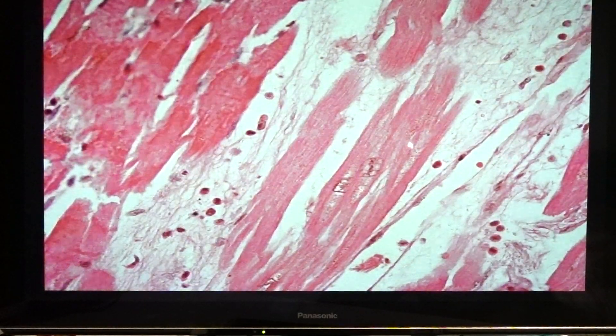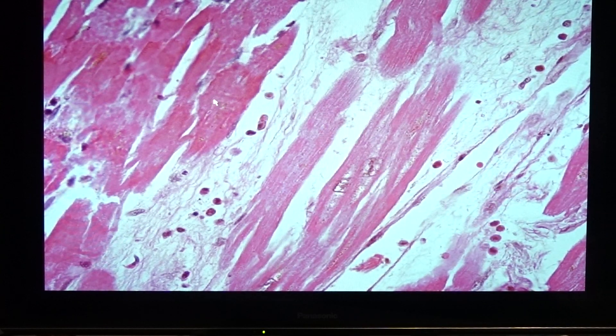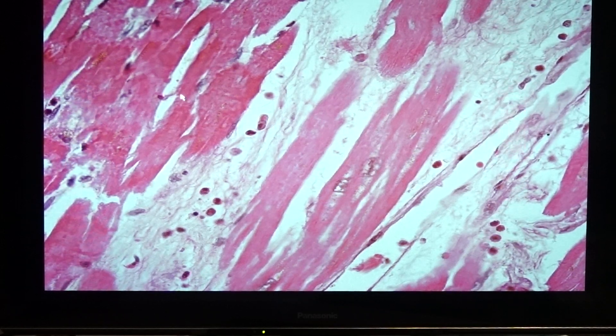The first thing I would show to you would be the presence of eosinophilia. This area is darker than this portion. If you look at the high power magnification, you can see that this portion is lighter with the presence of the nucleus, and this portion is darker, more eosinophilic, with absence of the nucleus. So these are viable myocytes and these are necrotic myocytes. Hypereosinophilia is a sign of necrosis or cell death.